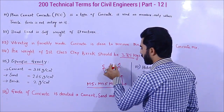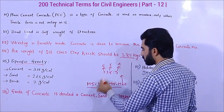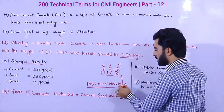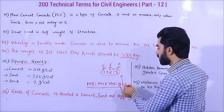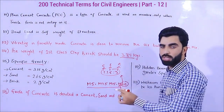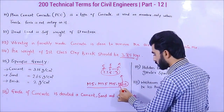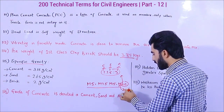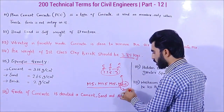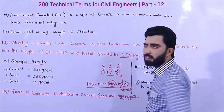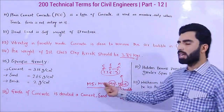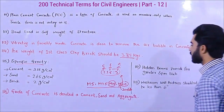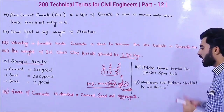When we combine cement, sand, and aggregate with the ratio 1:1.5:3, that is M20 grade concrete — where M stands for mix and 20 is the strength of concrete after 28 days, which is 20 Newton per mm². M15 means 15 Newton per mm², M7.5 means 7.5 Newton per mm², and so on.